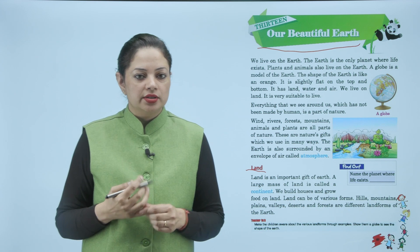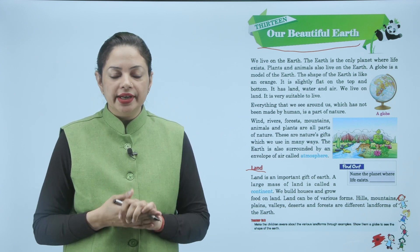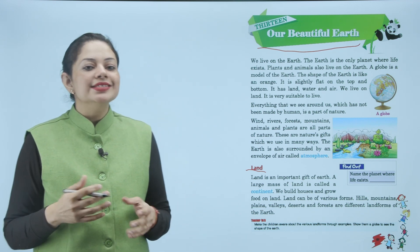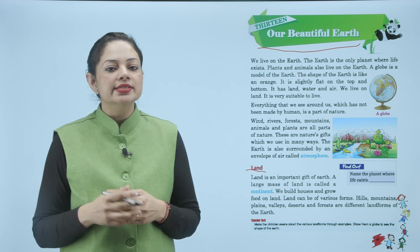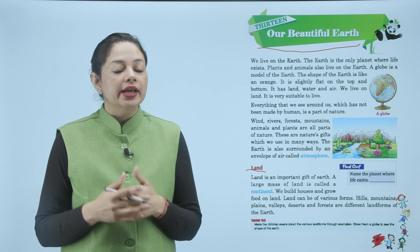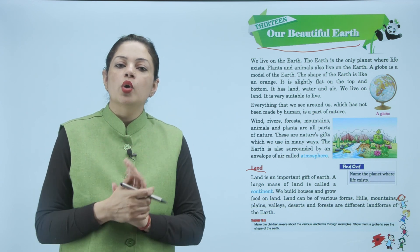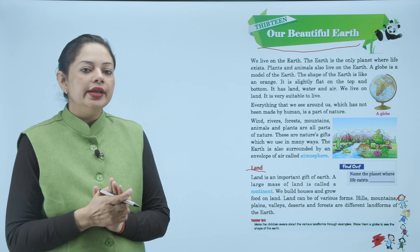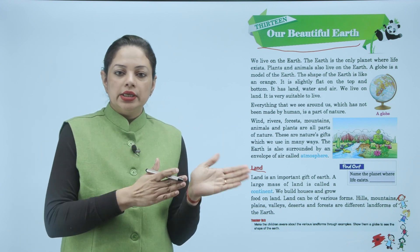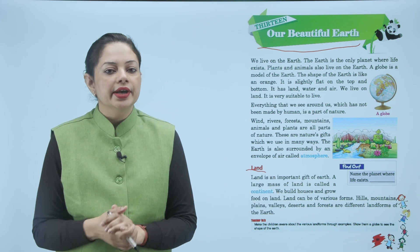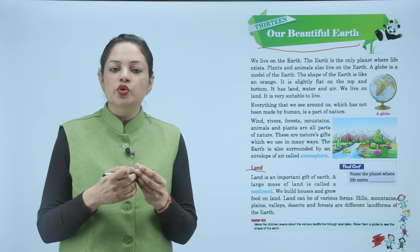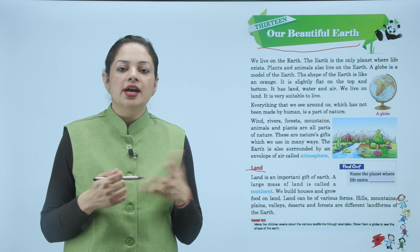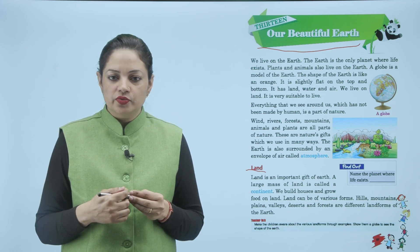Land is an important gift of earth. A large mass of land is called a continent. We build houses and grow food on land. Land can be of various forms — hills, mountains, plains, valleys, deserts and forests are different land forms of the earth. Land पर हम रहने के लिए घर बनाते हैं और खाना उगाने के लिए plants grow करते हैं।